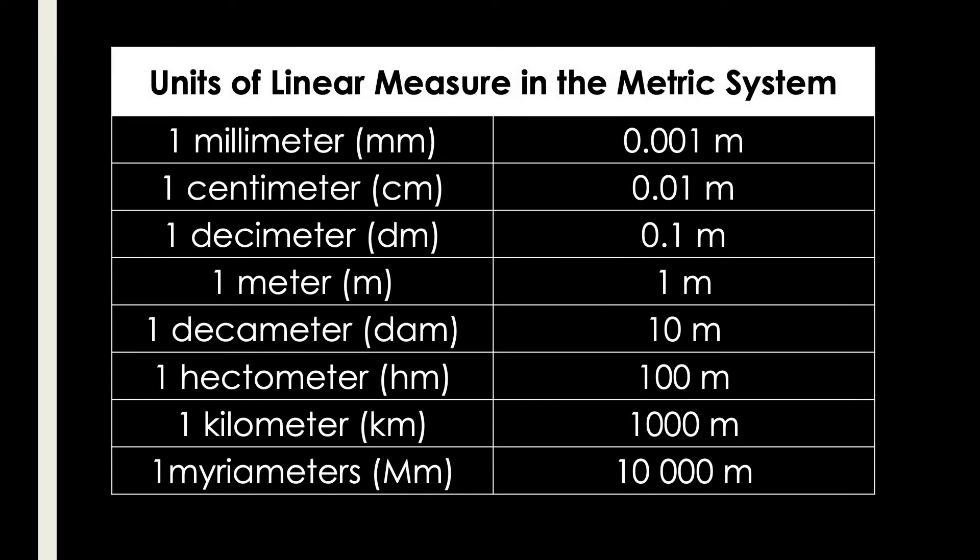Here's the table of units of linear measure in the metric system. In one millimeter, we have 0.001 meter, or in one meter we have 1,000 millimeters. In one centimeter, we have 0.01 meter. In one decimeter, we have 0.1 meter, or 10 decimeters in one meter.